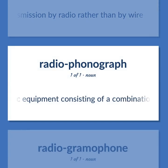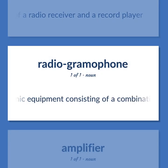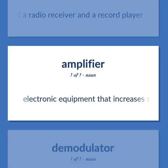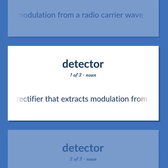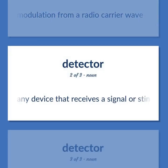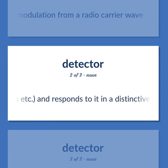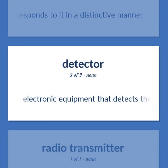Electronic equipment consisting of a combination of a radio receiver and a record player. Electronic equipment that increases the strength of signals passing through it. A rectifier that extracts modulation from a radio carrier wave. Any device that receives a signal or stimulus, such as heat, pressure, light, or motion, and responds to it in a distinctive manner. Electronic equipment that detects the presence of radio signals or radioactivity.